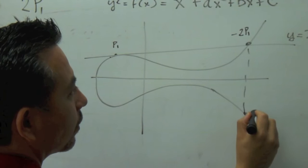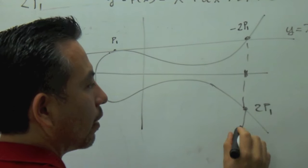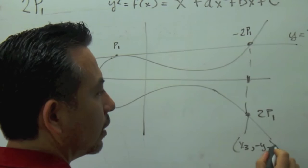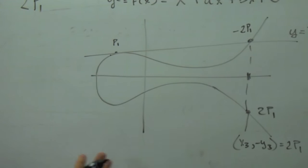And this reflection here is our 2P1. So these coordinates right here are x3, negative y3, right? This is equal to 2P1. So how are we going to start?